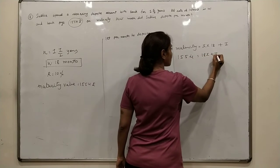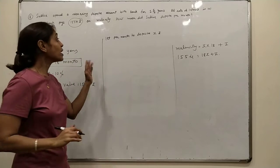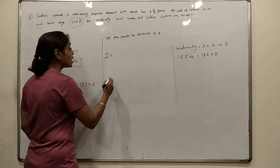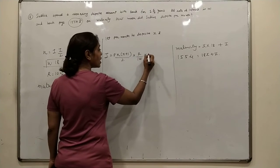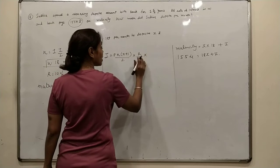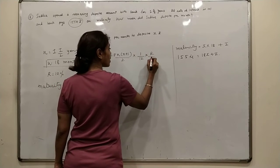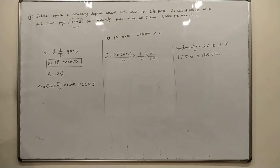1554 equals 18x plus interest. That is the maturity value. But interest for the recurring account formula is P times n times (n plus 1) divided by 2, times 1/12, times r upon 100. The formula is P times n times (n plus 1) divided by 2, times r upon 100.